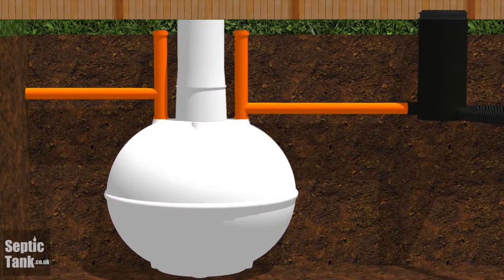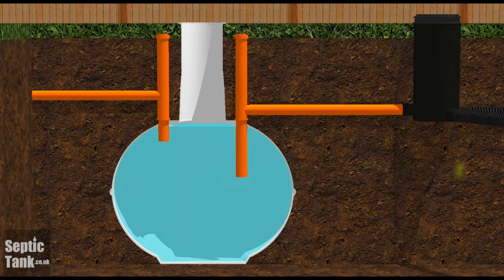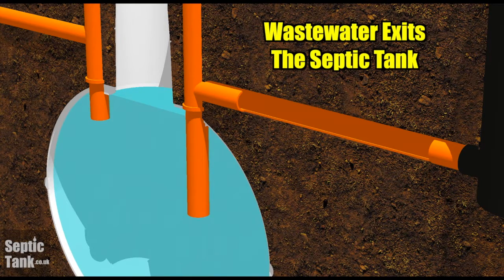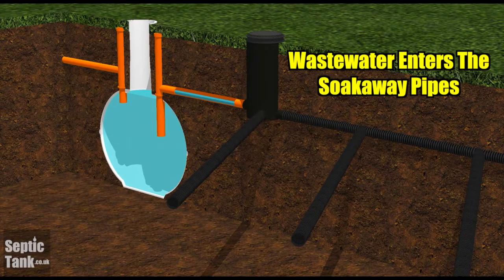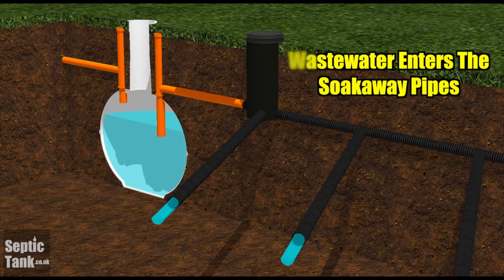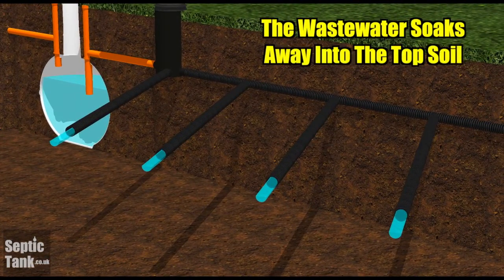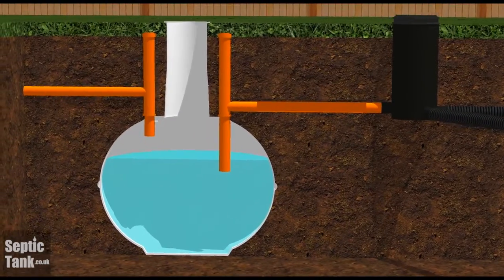Once the waste water enters the septic tank, it fills up until the waste water reaches the outlet pipe. The waste water then exits via the outlet pipe towards the soak away, where it enters the soak away pipes and soaks or drains away naturally into the topsoil. That's the basic function of how a septic tank and soak away work.